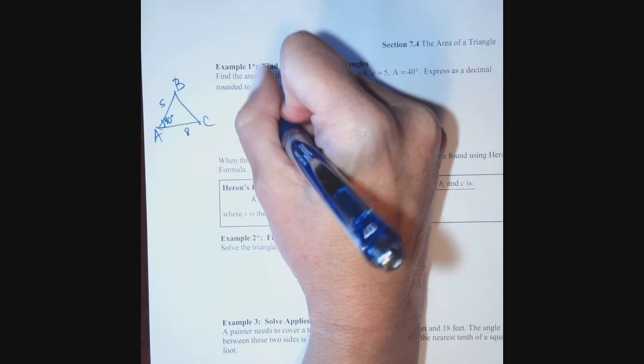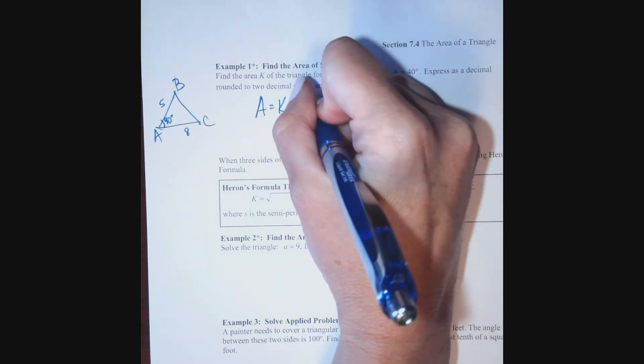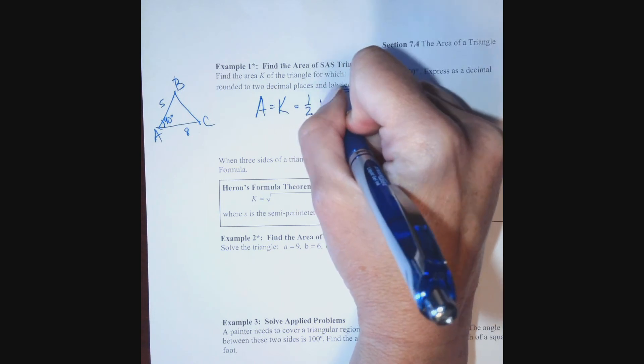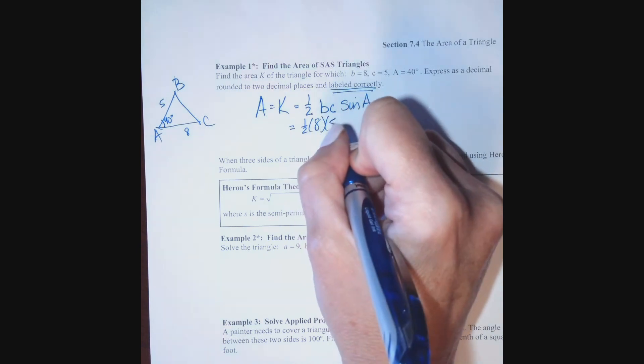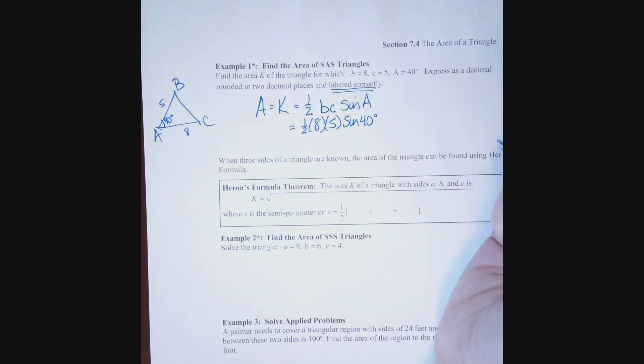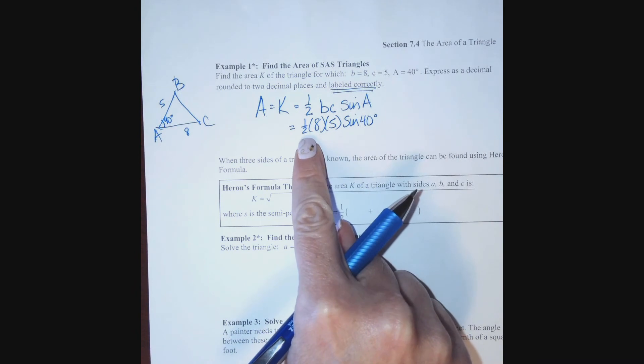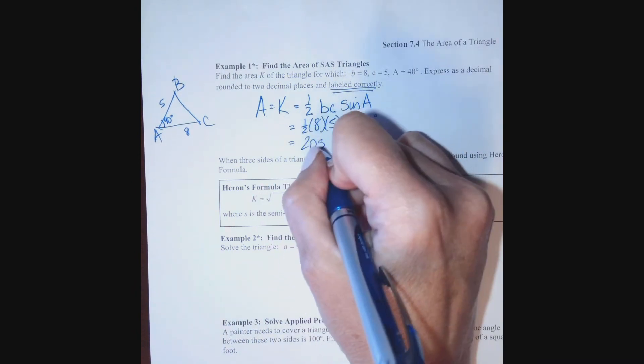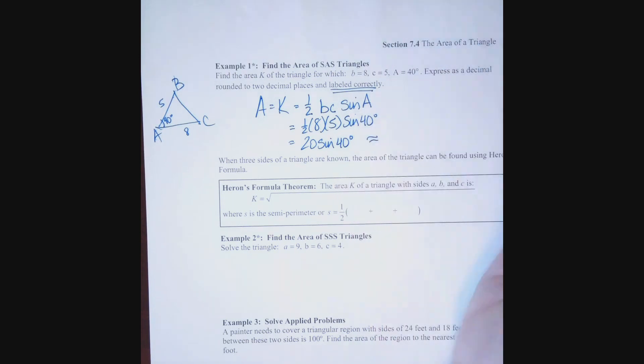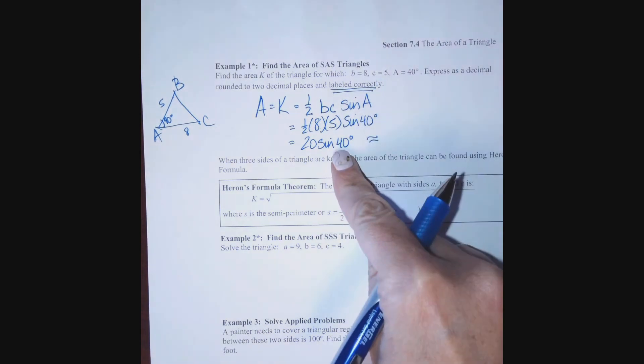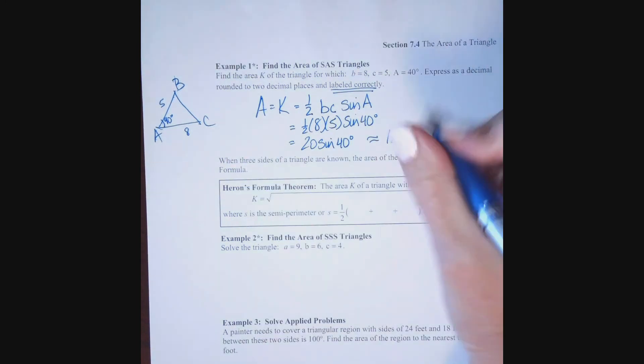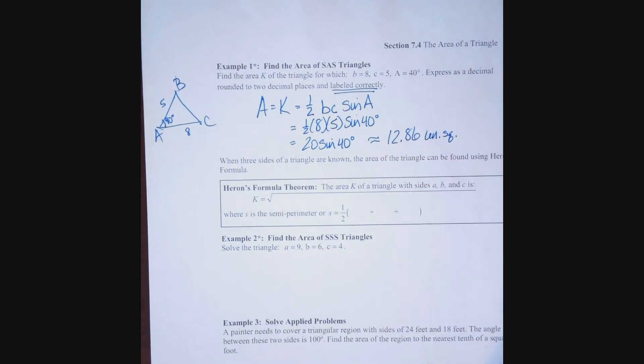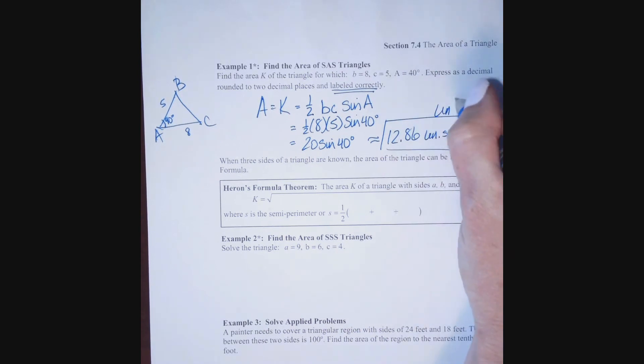Okay, here we go. My area formula, area or K, is equal to one-half, in this case B times C times the sine of A. So I have one-half times 8 times 5 times the sine of 40 degrees. Well, 8 times 5 is 40, and half of 40 is 20. So, what I have is 20 times the sine of 40 degrees. I'm going to plug this into my calculator, round it to two decimal places. I get 12.86. I need correct units. I wasn't given units, so I'm just going to say units squared.